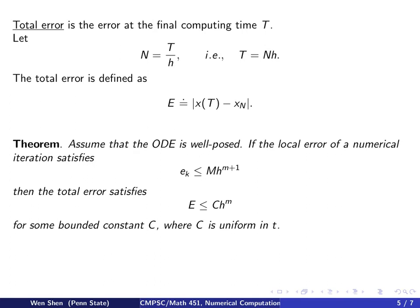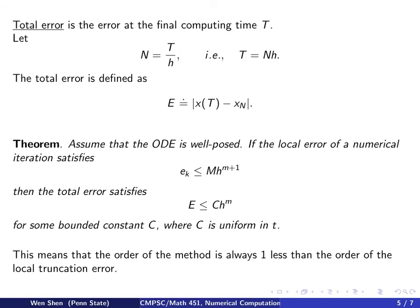And we have the following theorem, which is kind of a general theorem. It says that if now we assume the ODE is well-posed, well-posed following the definition we just gave, that it's stable with respect to perturbations on the initial data. And if now the local error of a numerical iteration satisfies eₖ ≤ Mh^(m+1), where M is a constant, then the total error satisfies capital E is less than some constant C times h to the power m. And then here C is a bounded constant. So this means that if the order of the local error is m + 1, the order of the total error is always 1 less, and this is a general result.